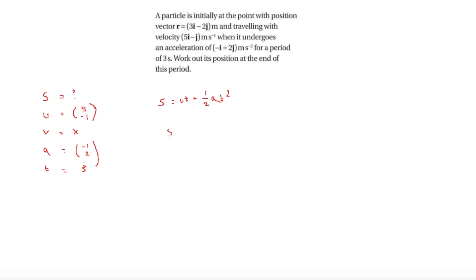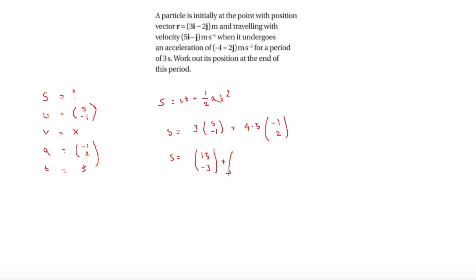S is what we're trying to find out. Then ut is 3 times the vector 5, minus 1, which gives 15, minus 3. Then t squared is 9, so half of that is 4.5, times acceleration minus 1, 2, giving plus minus 4.5, 9. So s equals 15 minus 4.5 for the i-component, which is 10.5i, and minus 3 plus 9 for the j-component, which is plus 6j.